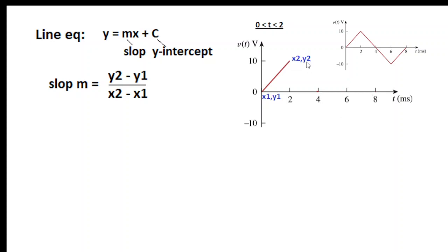We will see y2 is 10, y1 is 0, x2 is 2 milliseconds, and x1 is 0. So 10 minus 0 divided by 2 milliseconds minus 0 milliseconds equals 10 divided by 2 milliseconds equals 5 into 10 raised to the power 3, which is 5,000.